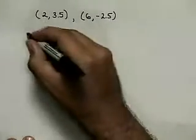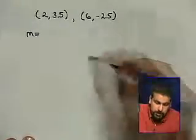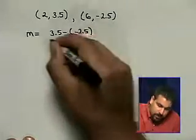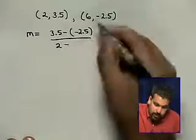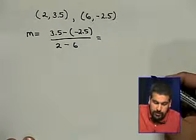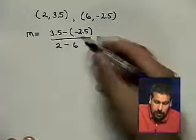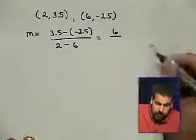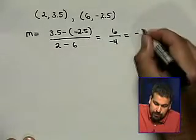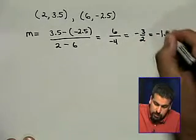Let's see how you did with that example. You were asked to find the slope-intercept form of the line containing the points (2, 3.5) and (6, negative 2.5). We need to first find the slope: change in y over change in x, which is 3.5 minus negative 2.5 over 2 minus 6. So 3.5 minus negative 2.5 is 3.5 plus 2.5, which equals 6. On the bottom, 2 minus 6 is negative 4, giving us a slope of negative 3/2, or negative 1.5.